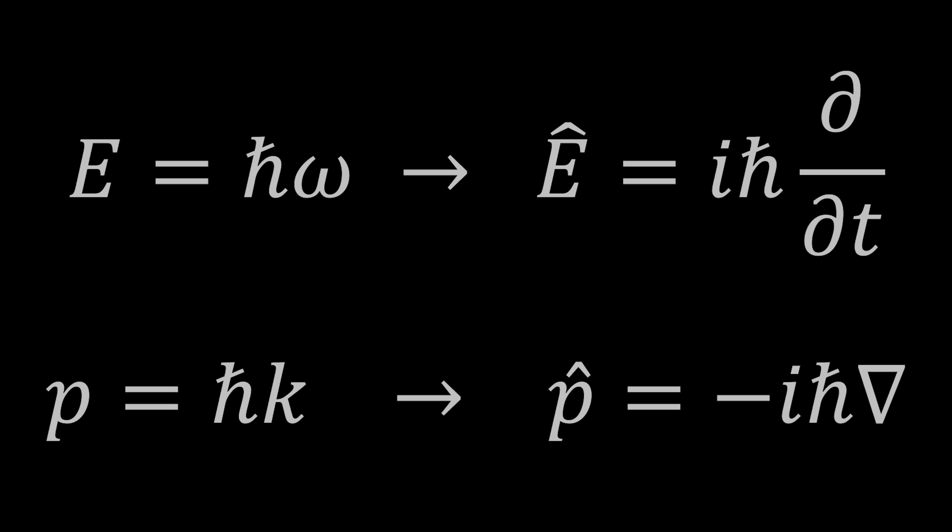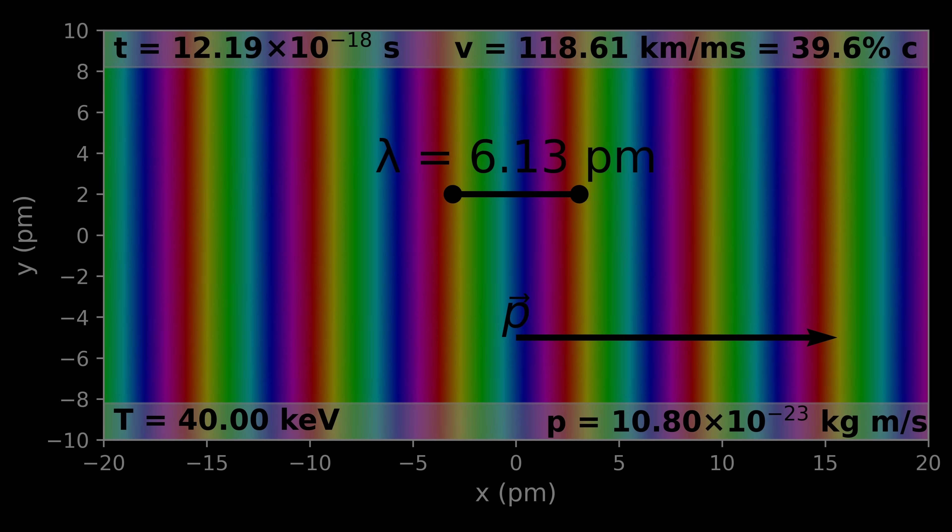Normally when you're learning quantum mechanics, the de Broglie relations are taught to motivate the derivation of the momentum and energy operators. But that doesn't mean that the de Broglie relations are causally prior to the Schrödinger equation. It's more accurate to see them as two sides of the same coin.